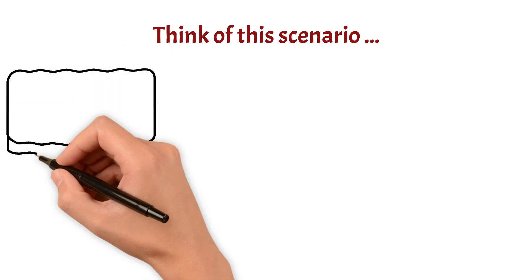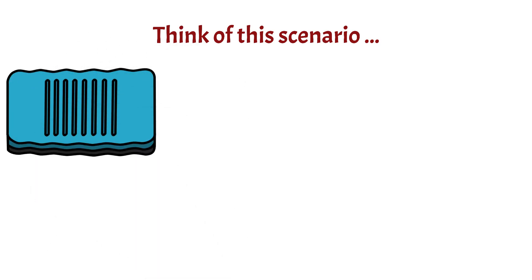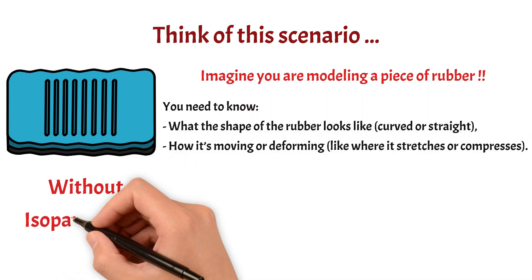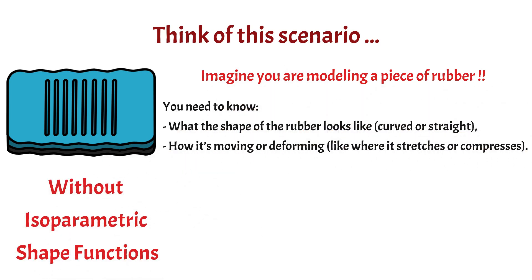Now, let's break this down with a more simpler example. Imagine you are modeling a piece of rubber, yeah, like that squishy, stretchy kind. You want to figure out two things. What the rubber actually looks like, is it straight, curved, wrinkled and how it's moving when it's stretching or squishing under some load.